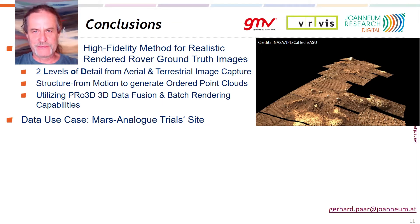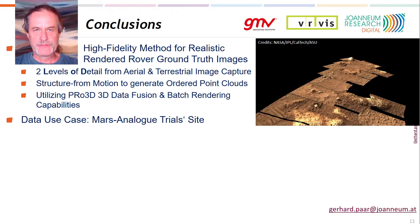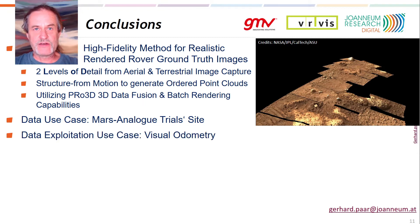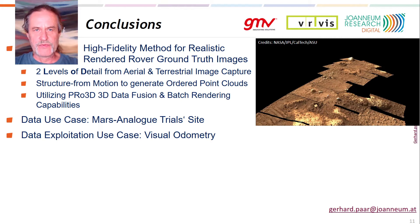Within the ADE project we could demonstrate and implement a high-fidelity method to generate realistically rendered rover ground truth images. Its default workflow uses two levels of detail, applying structure from motion to aerial and terrestrial image sequences to generate ordered point clouds. Those are used within the visualization software PRO3D for 3D data fusion and batch rendering. A Mars analog site on the island of Fuerteventura was used as a demonstration venue. To give a hint for end-to-end data exploitation, we briefly showed the evaluation of a visual odometry quantifiable behavior.